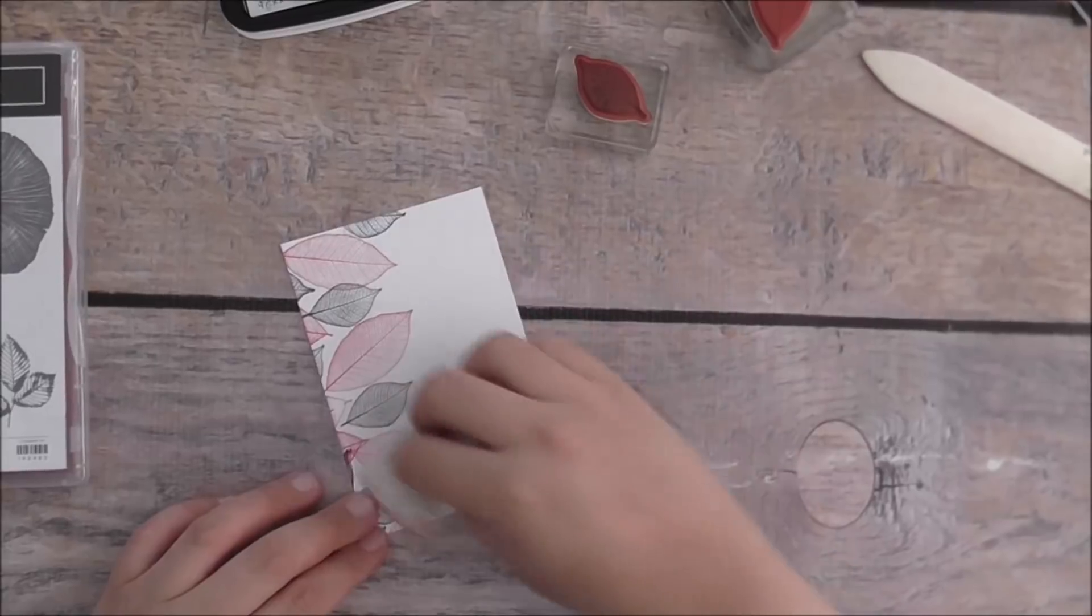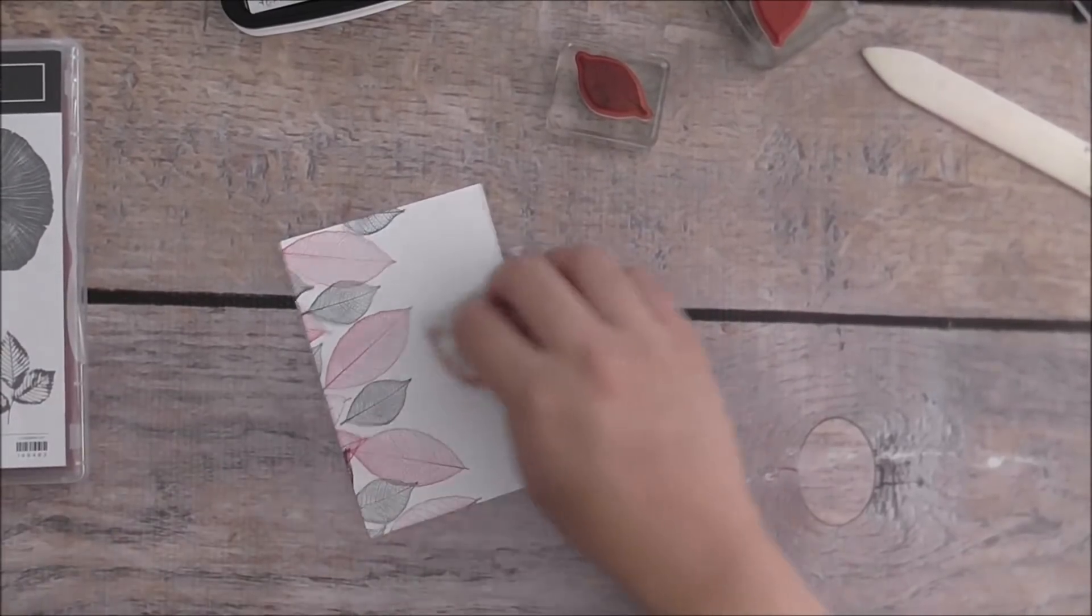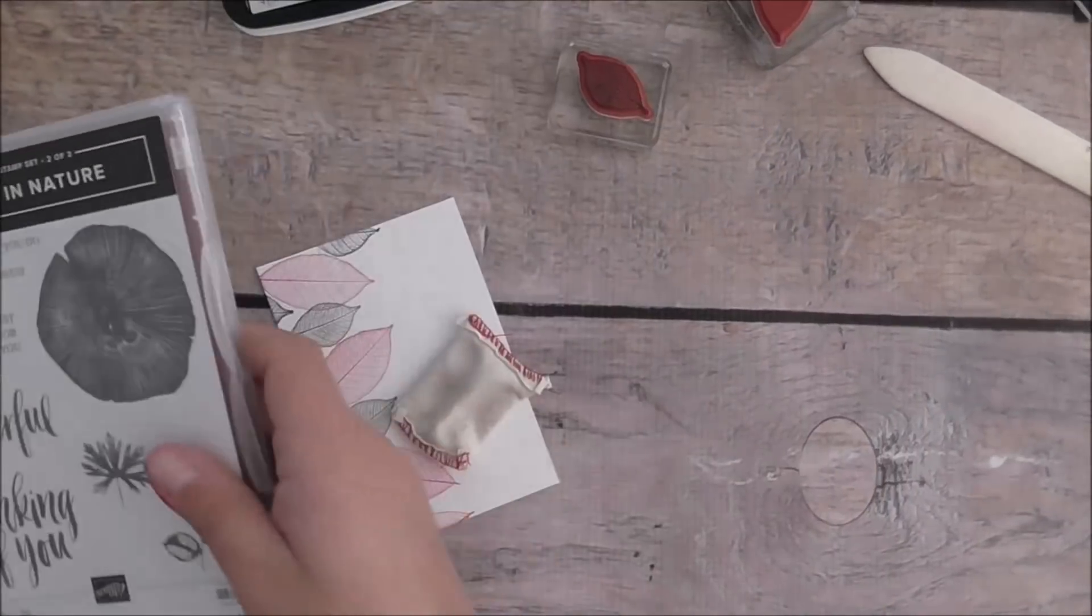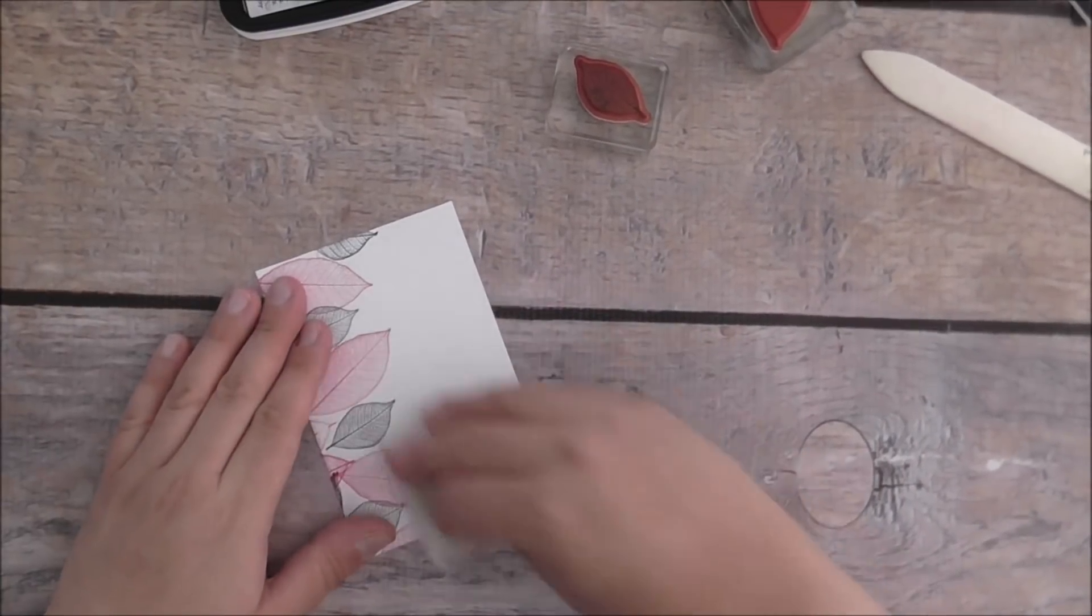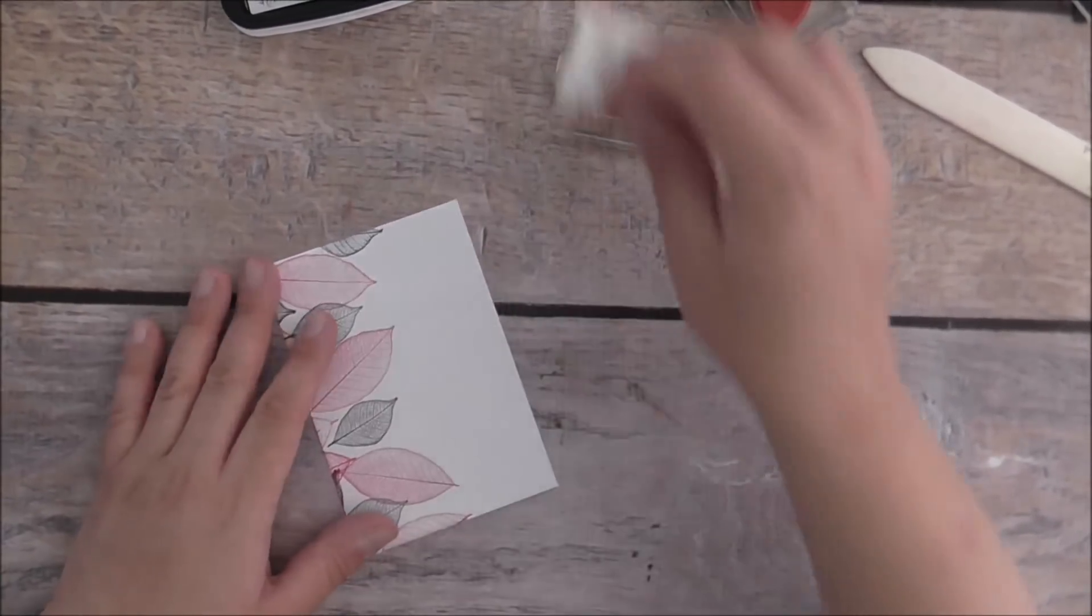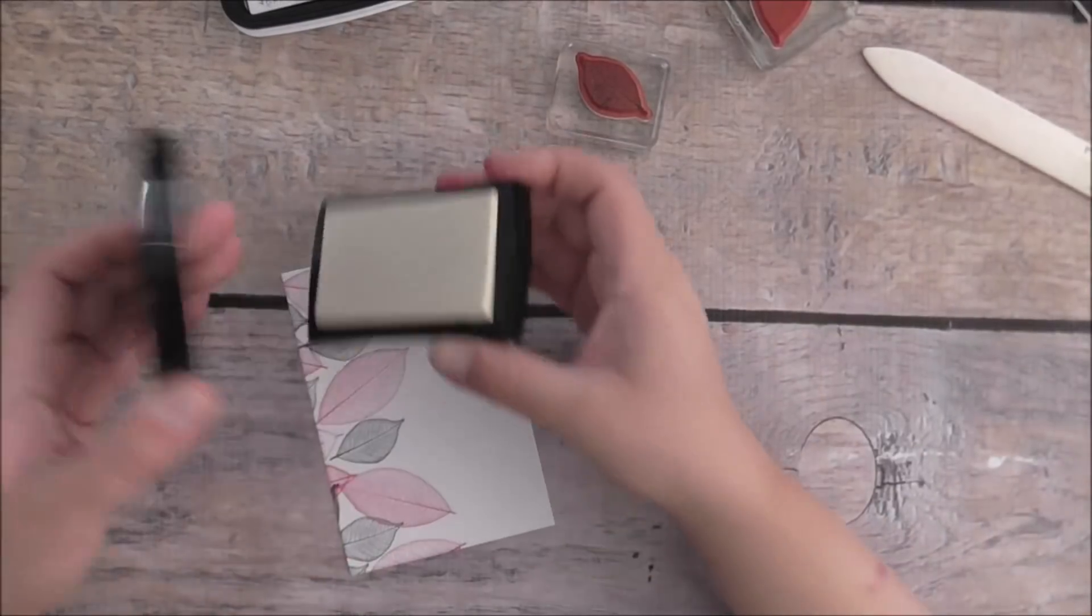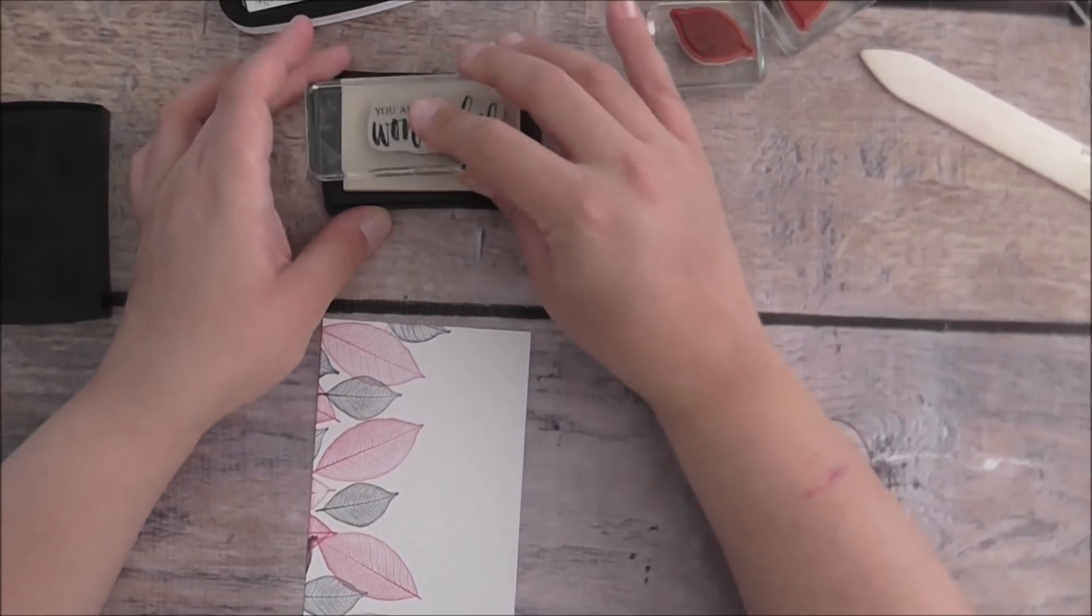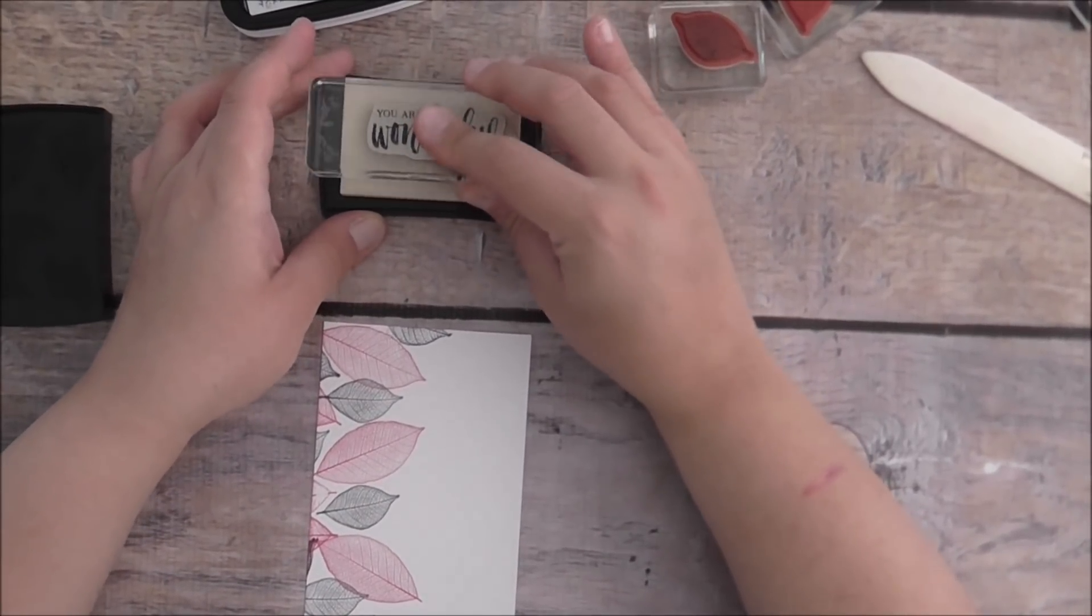With this now I'm going to take that away. I'm going to heat emboss that in gold, so I'm just going to put my embossing buddy over. I'm going to heat emboss the sentiment 'you are wonderful' from the stamp set. I'll grab my Versamark ink pad - I've got to watch what I'm doing.